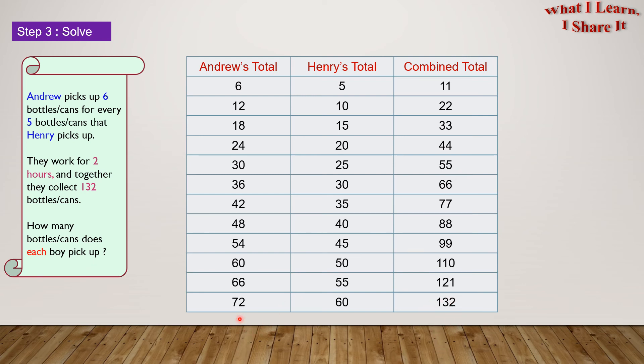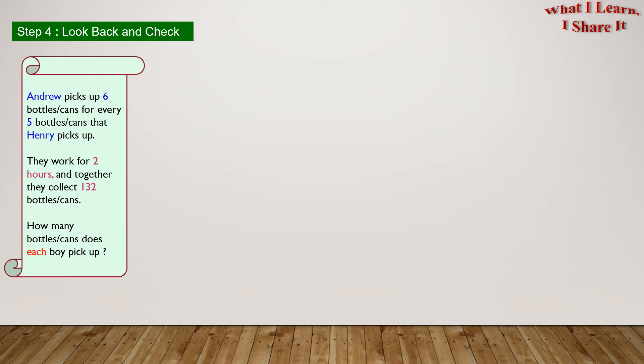Andrew's total is 72. Henry's total is 60. So, Andrew picked 72 items and Henry picked 60 items. Step 4. Look back and check.